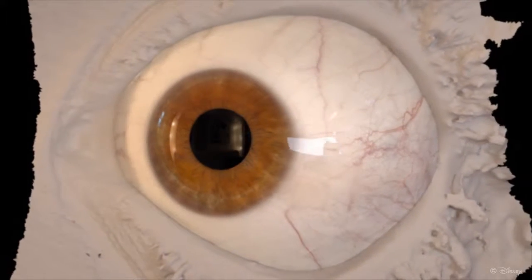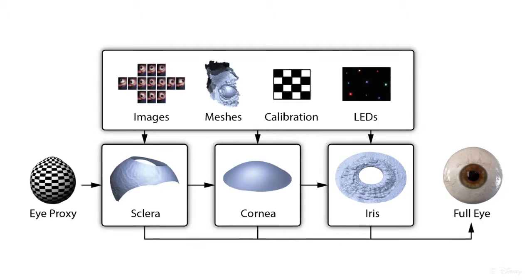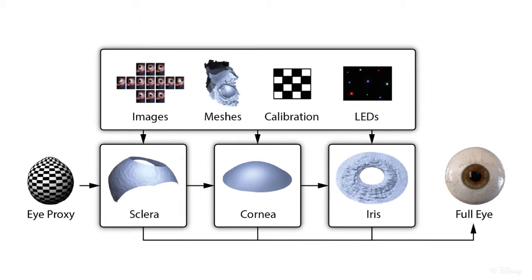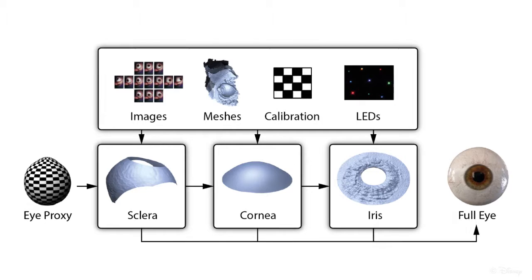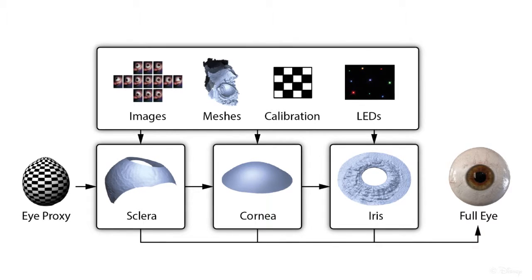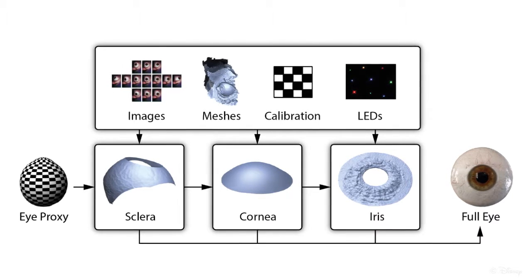Here we see the result of our eye capture method for one eye. Since each component of the eye exhibits different reflectance properties, we propose a progressive algorithm for eye reconstruction, starting with the sclera shape, followed by the cornea, and finally the iris. Please see the paper for details.